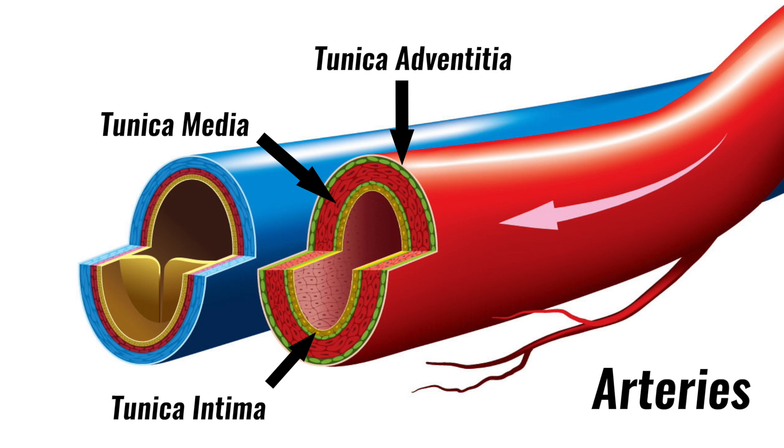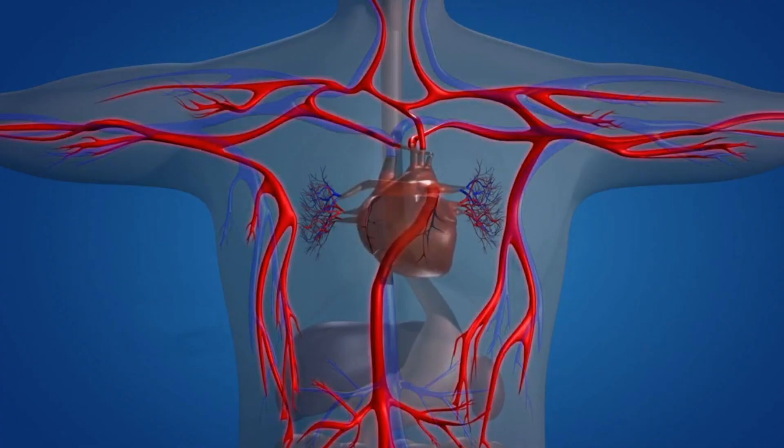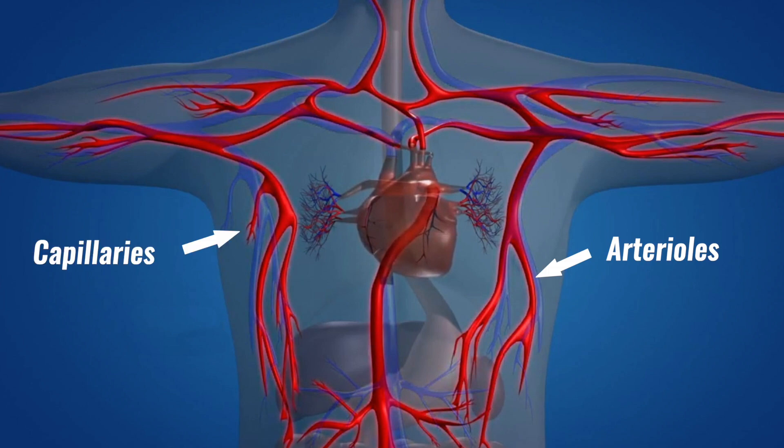The hollow centre through which blood flows is called the lumen. Arteries split into smaller vessels called arterioles and eventually into capillaries, which are the smallest blood vessels.